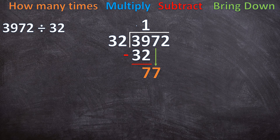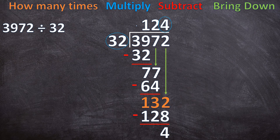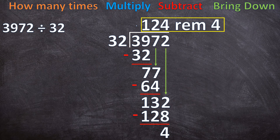Start over again. How many times can 32 go into 77? Two times. 2 times 32 is 64. Subtract: 77 minus 64 is 13. We still have a digit to bring down, so we bring down the 2. How many times can 32 go into 132? 4 times. 4 times 32 is 128. Subtract: 132 minus 128 is 4. There are no more digits to bring down, so our long division ends here. 3972 divided by 32 is 124 with a remainder of 4.